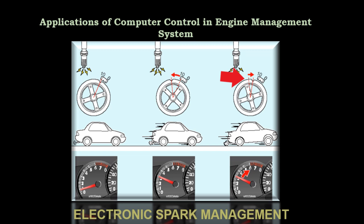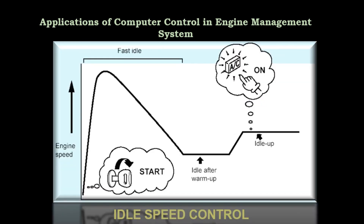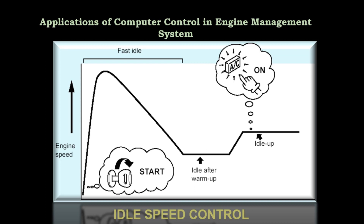The idle speed control system controls engine idle speed. Engine speed is increased during startup and warm-up to ensure easy starting and proper warm-up when the engine is cold. When the engine reaches its operating temperature, the idle speed is set as low as possible while maintaining a stable idle, to minimize fuel consumption and noise. When the AC switch is turned on or an increase in electrical load is detected, the idle speed is increased to ensure drivability.